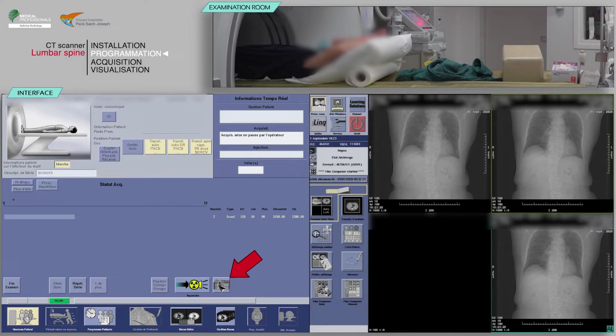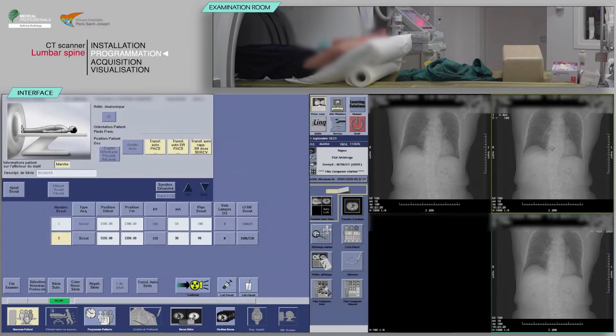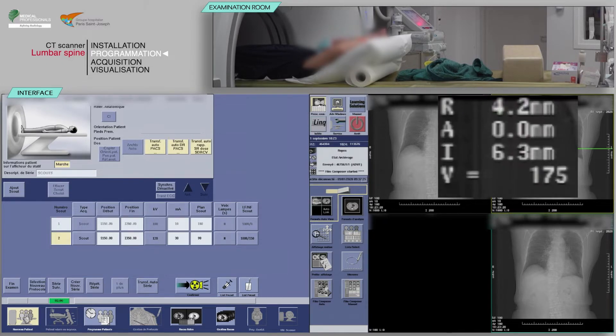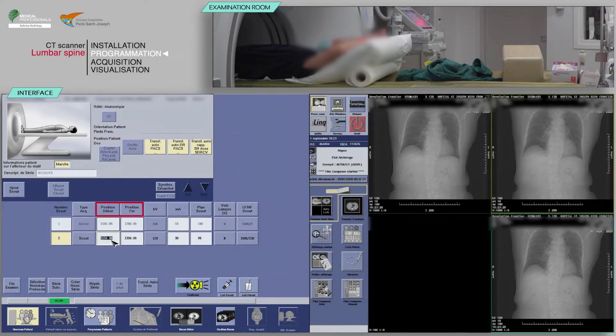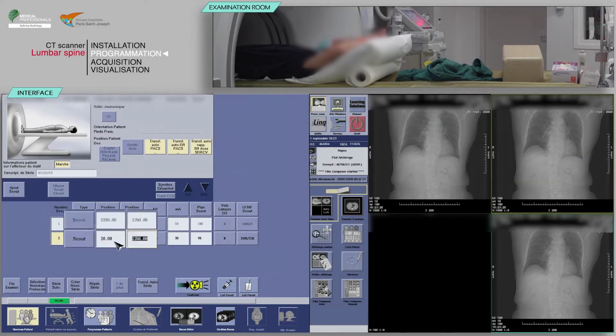Then, on the image at the top right, move the mouse to locate the beginning of the lateral acquisition and modify the values in the start position and end position.